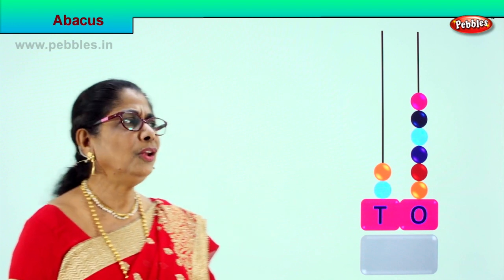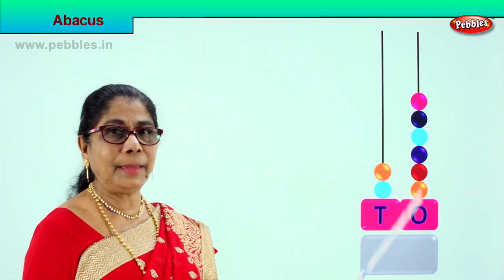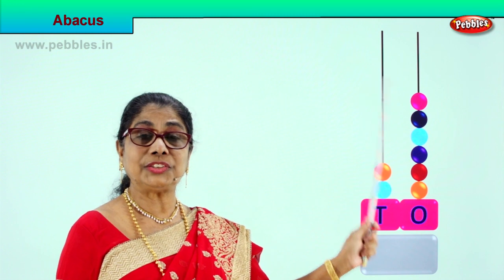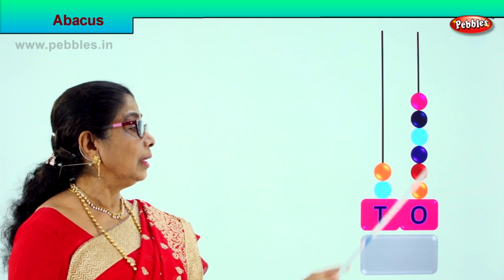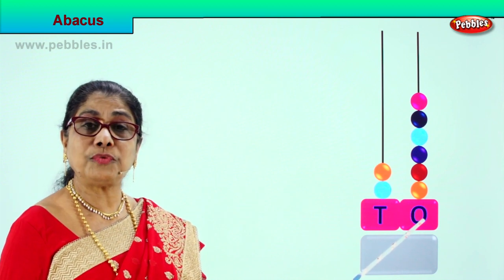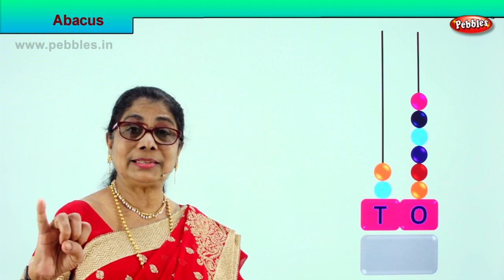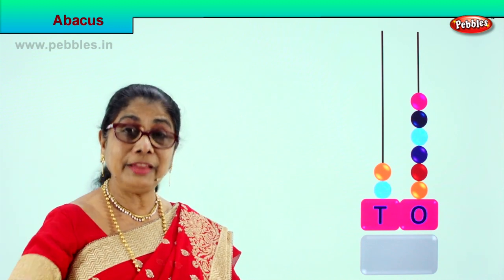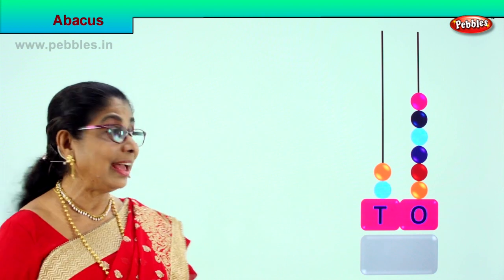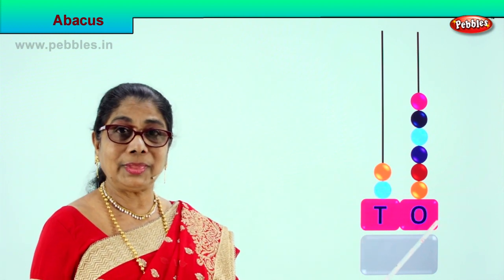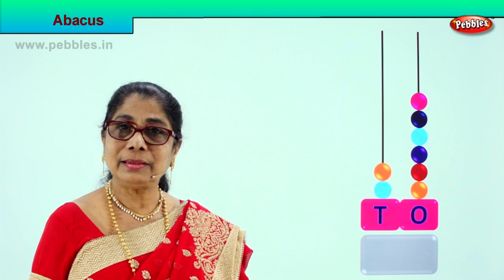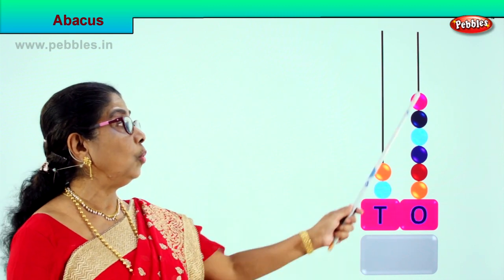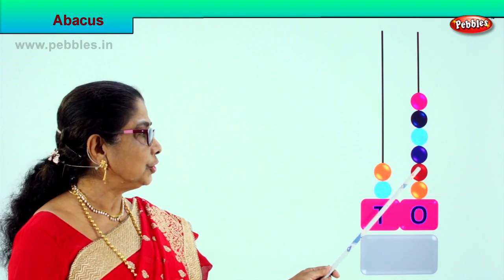Look at what you have here — this is called an abacus. You have a bowed frame and two iron rods or sticks on it. The first rod is called 'O' — O is short form for 'ones'. Ones are all the single digit numbers: 1, 2, 3, 4, 5, 6, 7, 8, 9. All single digit numbers are ones, and we put them on the first iron rod.